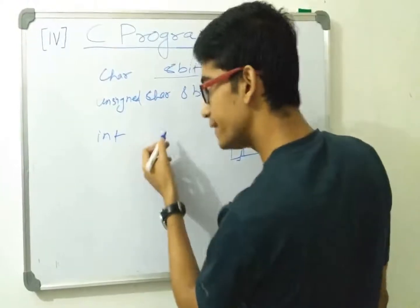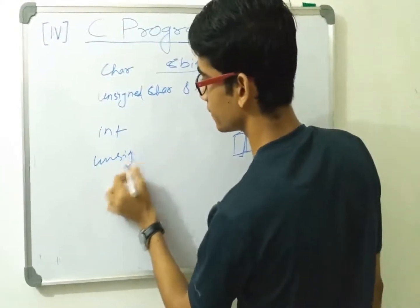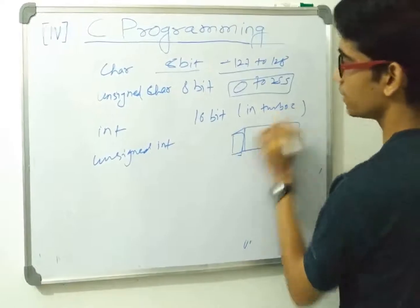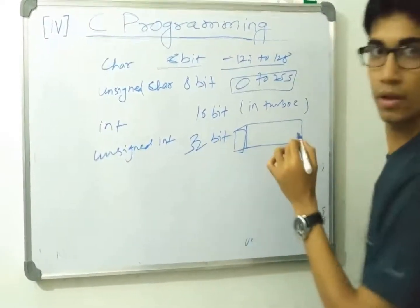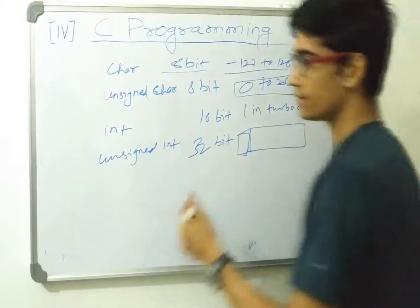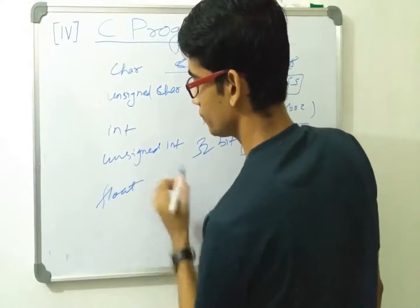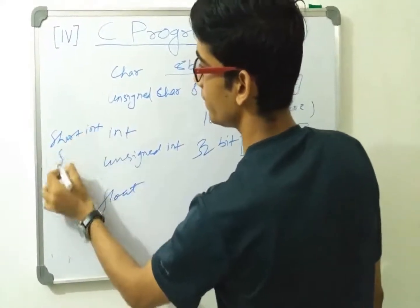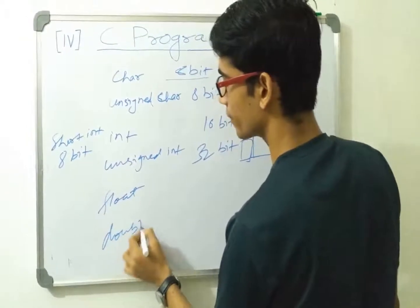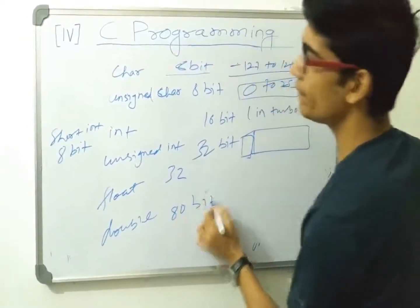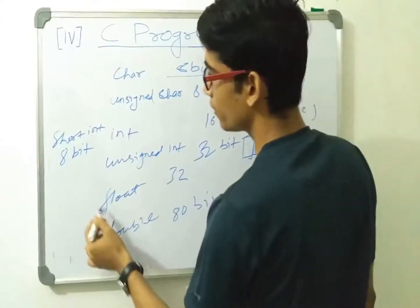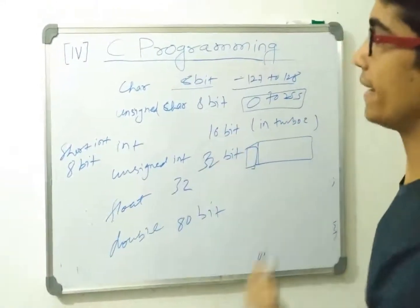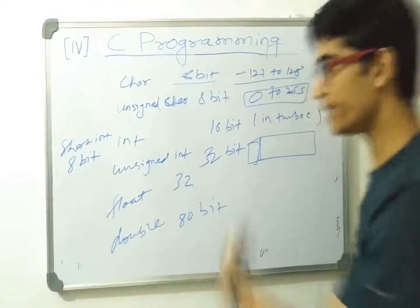Int, or signed int, are the same. Unsigned int also exists. In Turbo C, int is 16 bits; in GCC or some computers it's 32 bits. Float is 32 bits, double is 80 bits. We can also have short int, which is 8 bits. You can check standard textbooks or the internet for more detail on ranges, or contact us if you find it difficult.